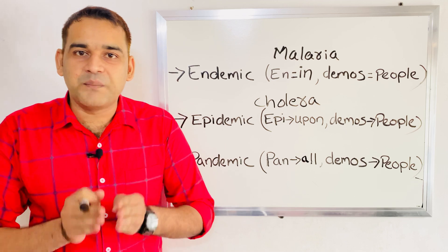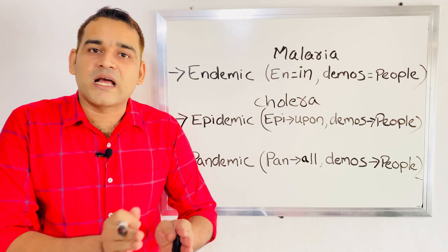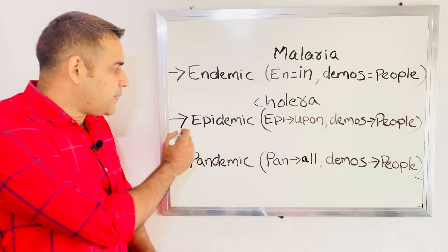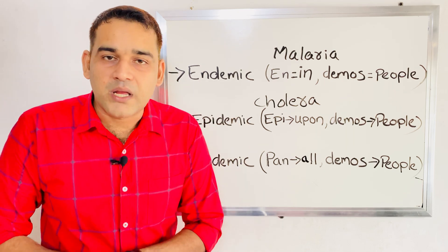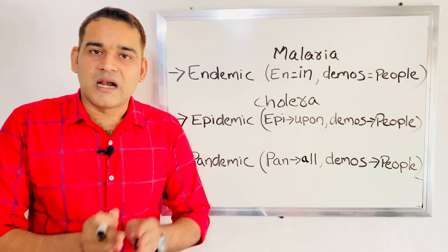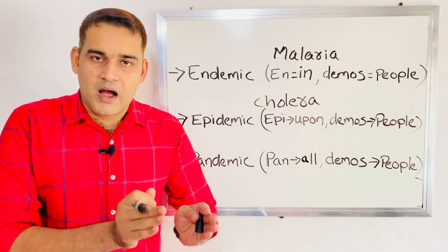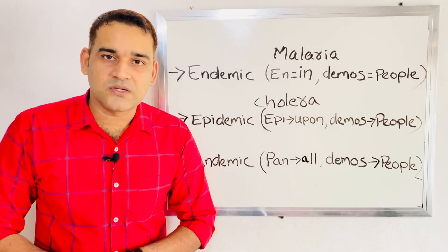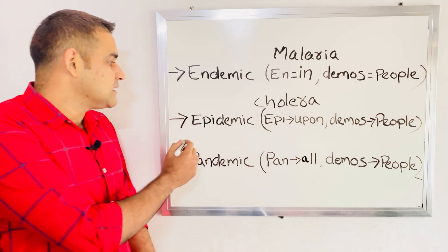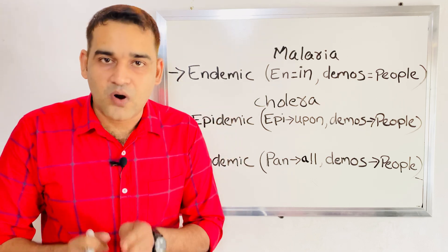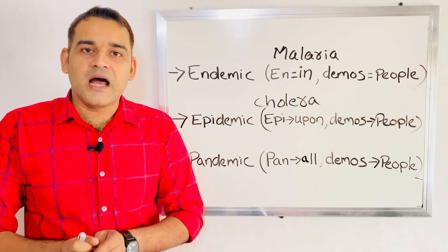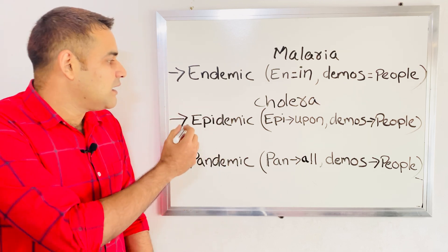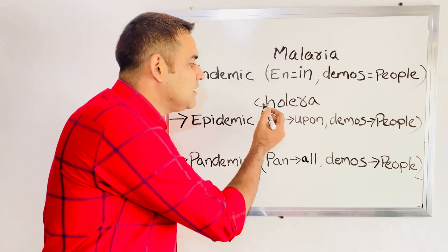Many students think that epidemic applies only to communicable diseases, but non-communicable diseases also come under epidemic. For example, hypertension, diabetes mellitus, or cancer — if those diseases are increasing more than normal expectation in an area, you can call it an epidemic. A good example here is cholera in India.